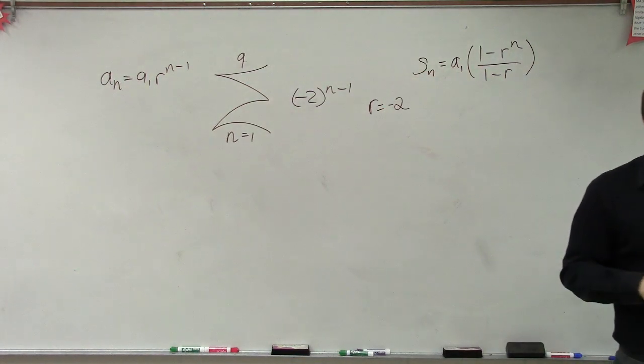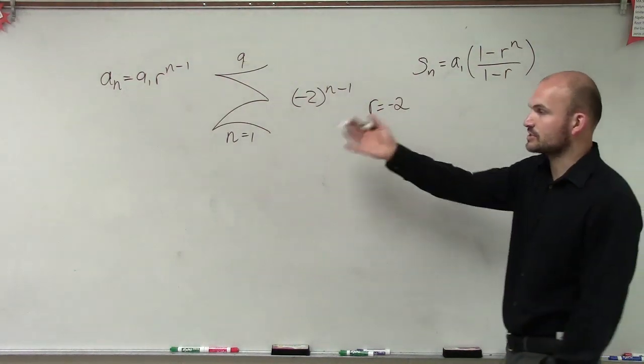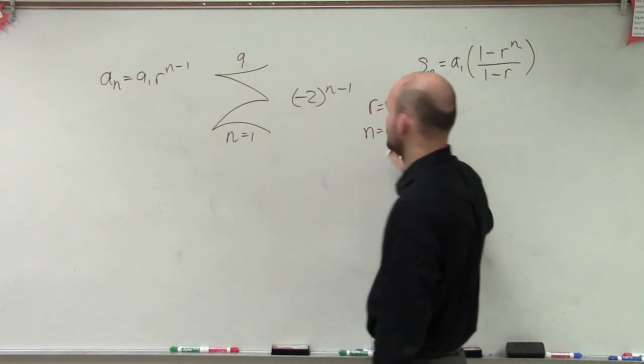And then do we know what n is? n is going to be our number of terms. Since we're starting at 1 and ending at 9, we're going to have n equals 9.